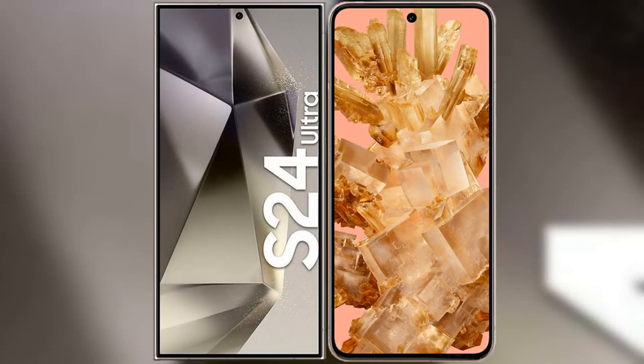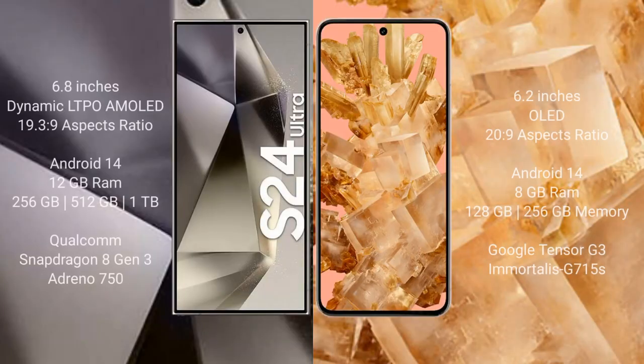I will compare the new Samsung Galaxy S24 Ultra with Google Pixel 8. Samsung Galaxy S24 Ultra comes with a 6.8 inches Dynamic LTPO AMOLED display and aspect ratio 19.3:9. Google Pixel 8 comes with a 6.2 inches OLED display and aspect ratio 20:9.